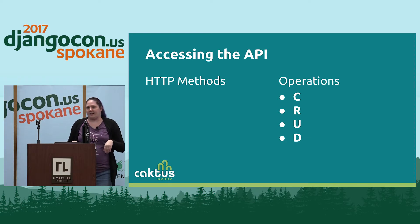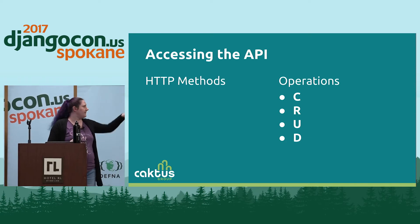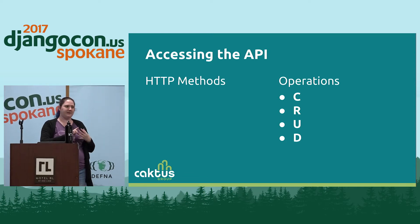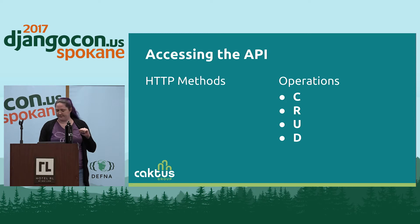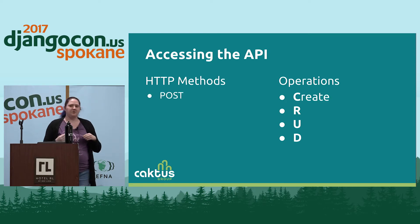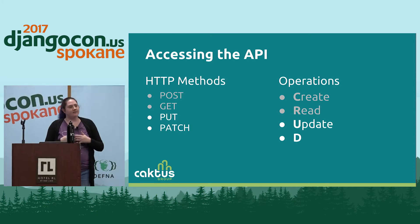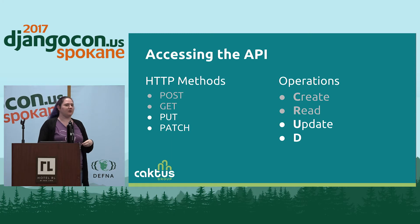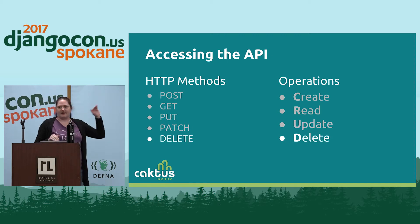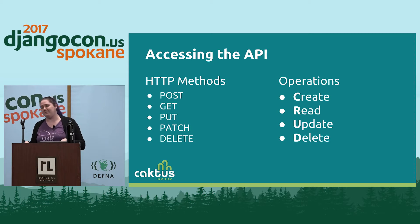When accessing our API, the structure is typically done using the CRUD acronym — create, read, update, and delete — and we use specific HTTP methods so Django REST Framework knows what we're trying to accomplish. To create an instance, we do a POST. To read — either a list or a detail view — we use GET. For update, we use either PUT or PATCH: PUT expects all fields just as if you were doing a POST, whereas PATCH just takes whatever fields you give it and leaves everything else as it was. And DELETE uses the HTTP DELETE method.